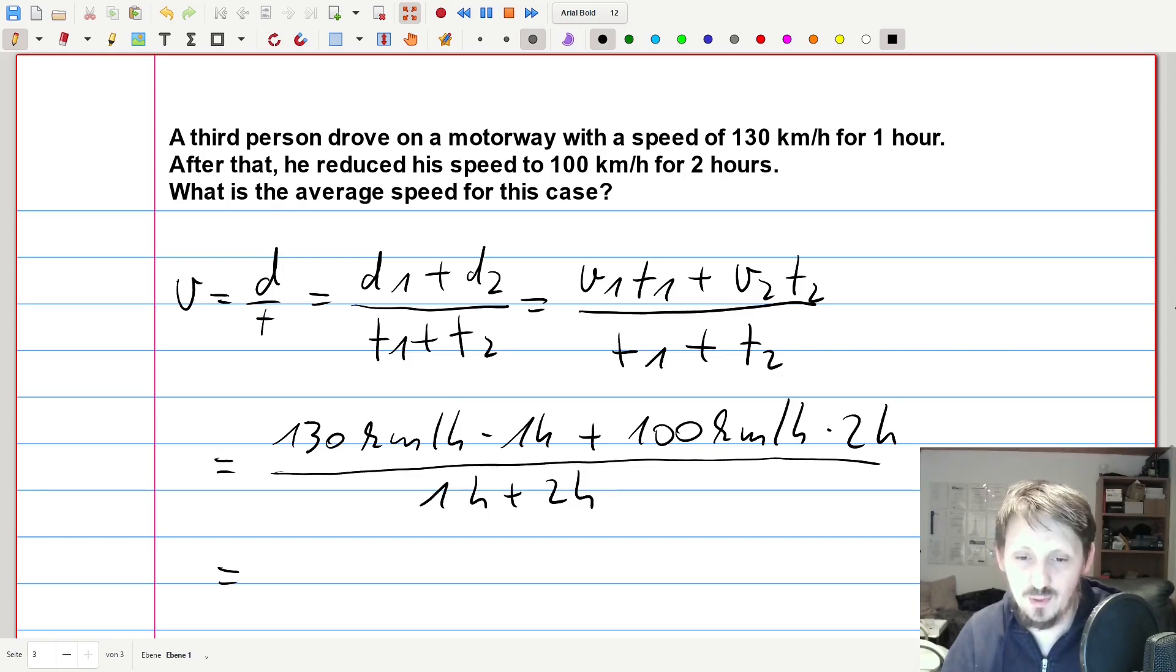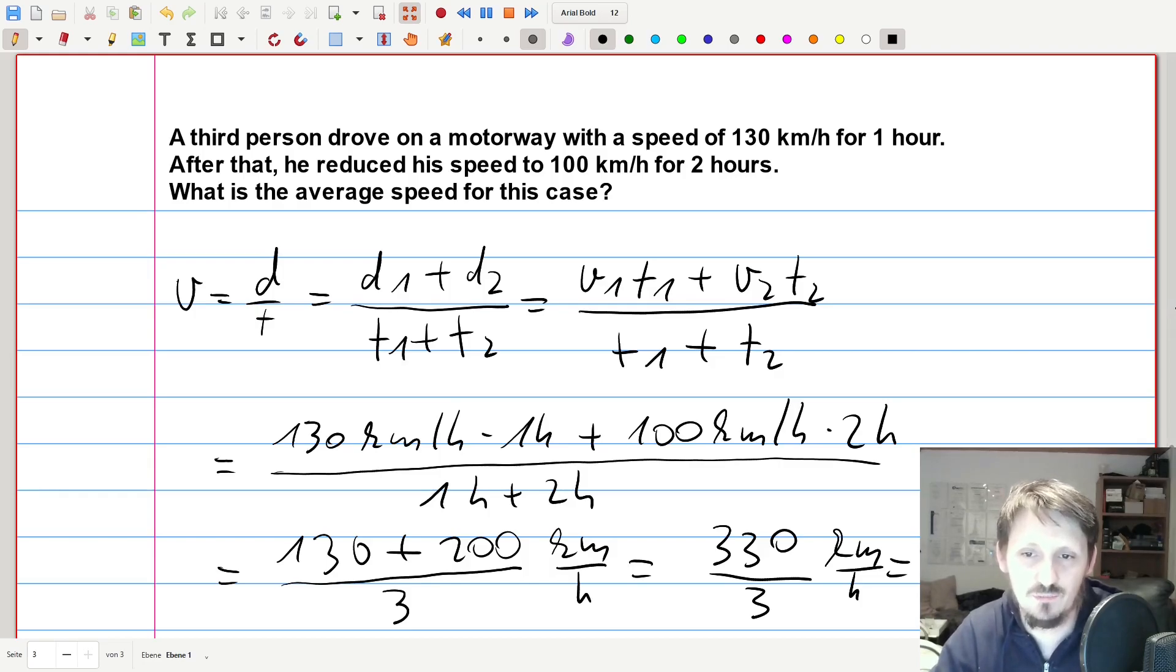So you have here 130 times 1 gives 130, the units I will now neglect because we know at the end it should be km per hour. So we have here 130 plus 100 times 2 is 200 divided by 1 plus 2 is 3. So now we can calculate 130 plus 200 and this is 330, divided by 3 km per hour, and then we can finally also calculate this and it gives a value of 110 km per hour, which is then the final result for the average speed of this person.